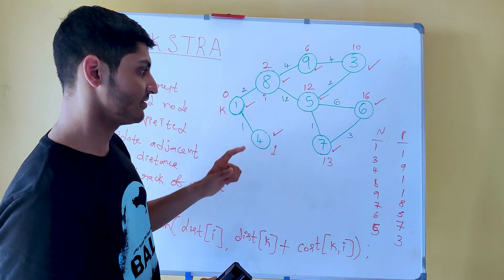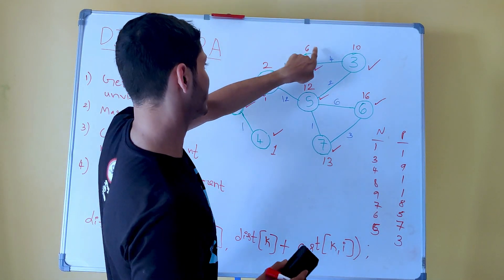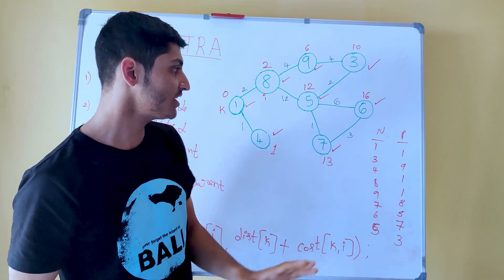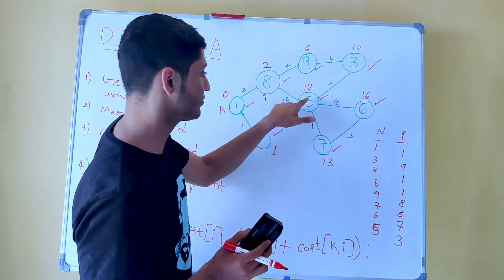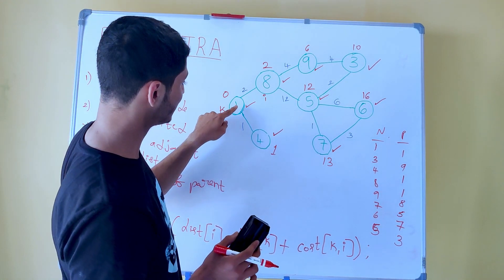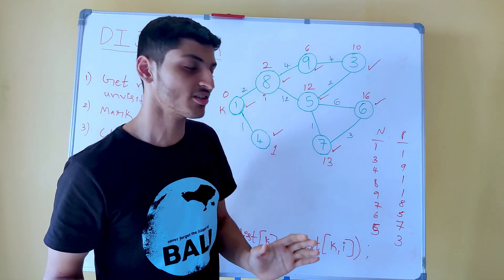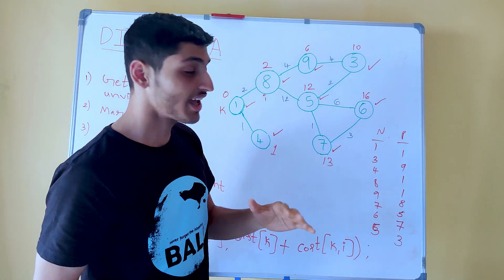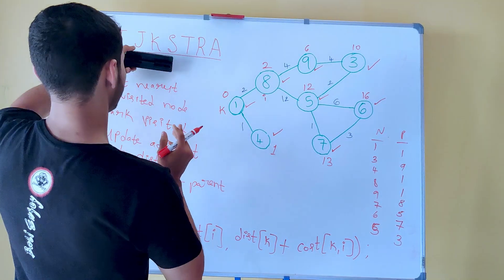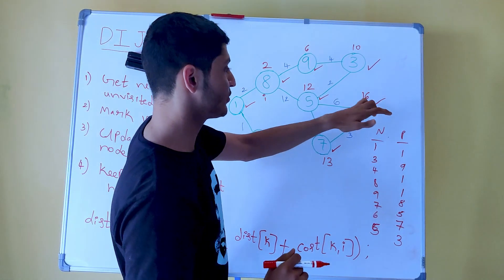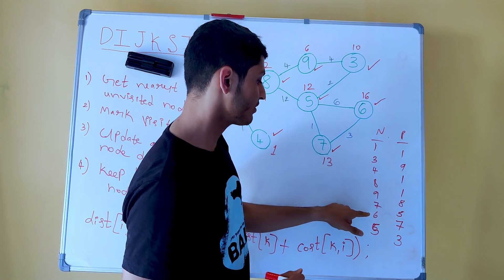All the distances we have found — 16, 10, 6, 2 — correspond to the least distance, the minimum cost from the source node to each corresponding node. So if I want to go from node 1 to node 6, the minimum cost of reaching there is 16. To get the actual path, we need to use the parent table.